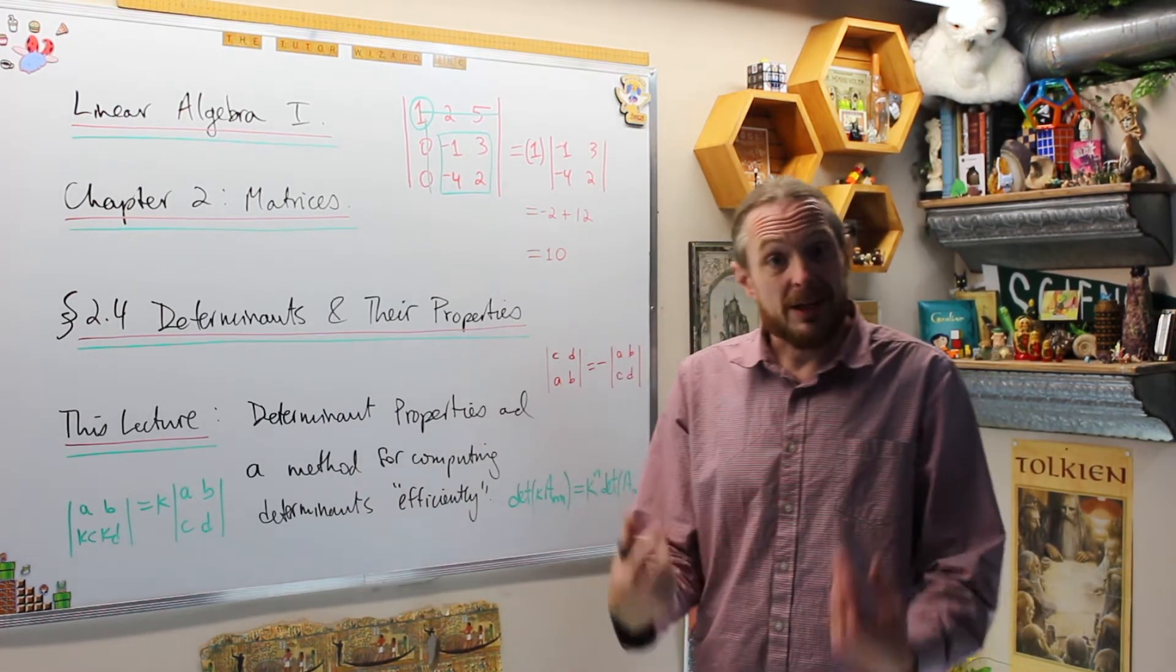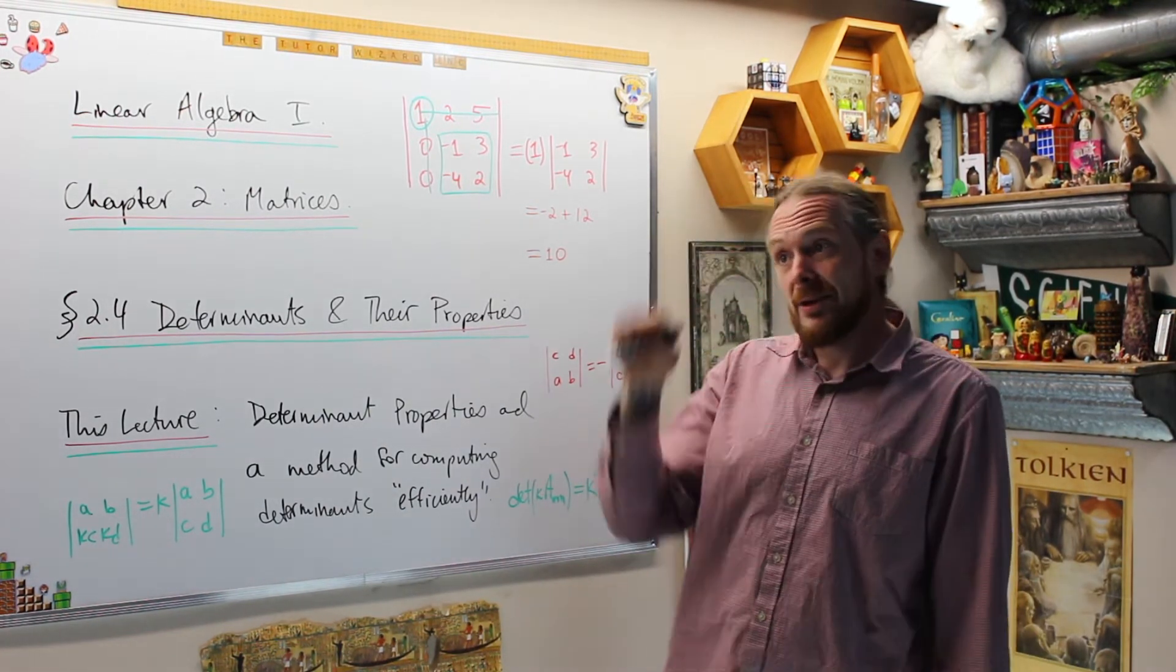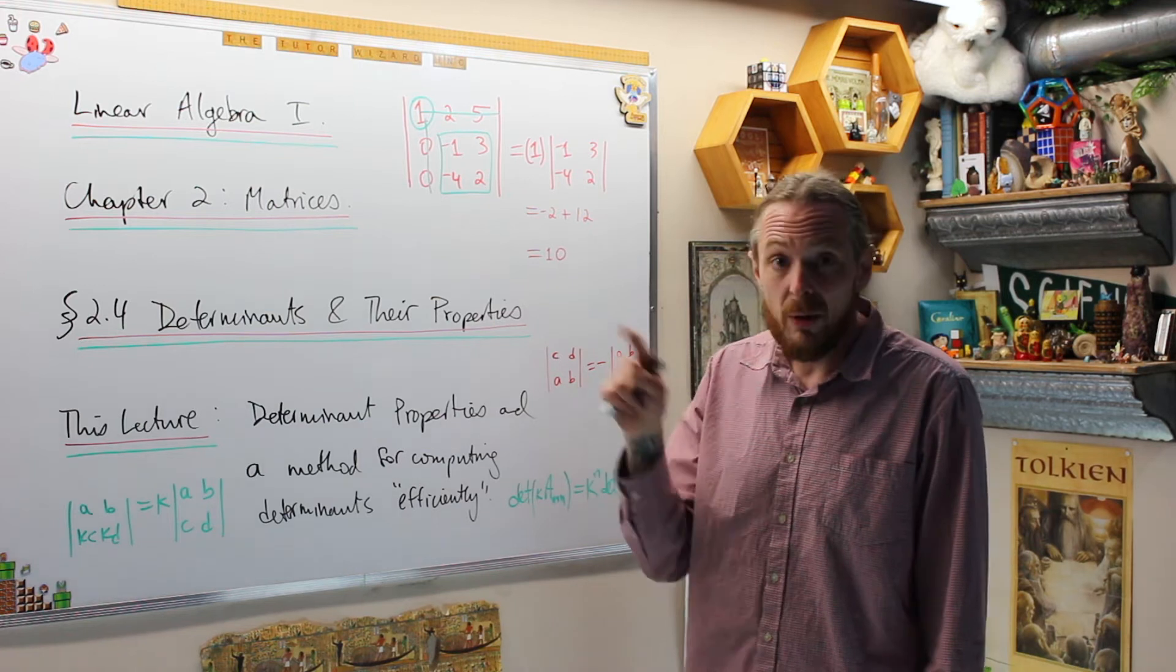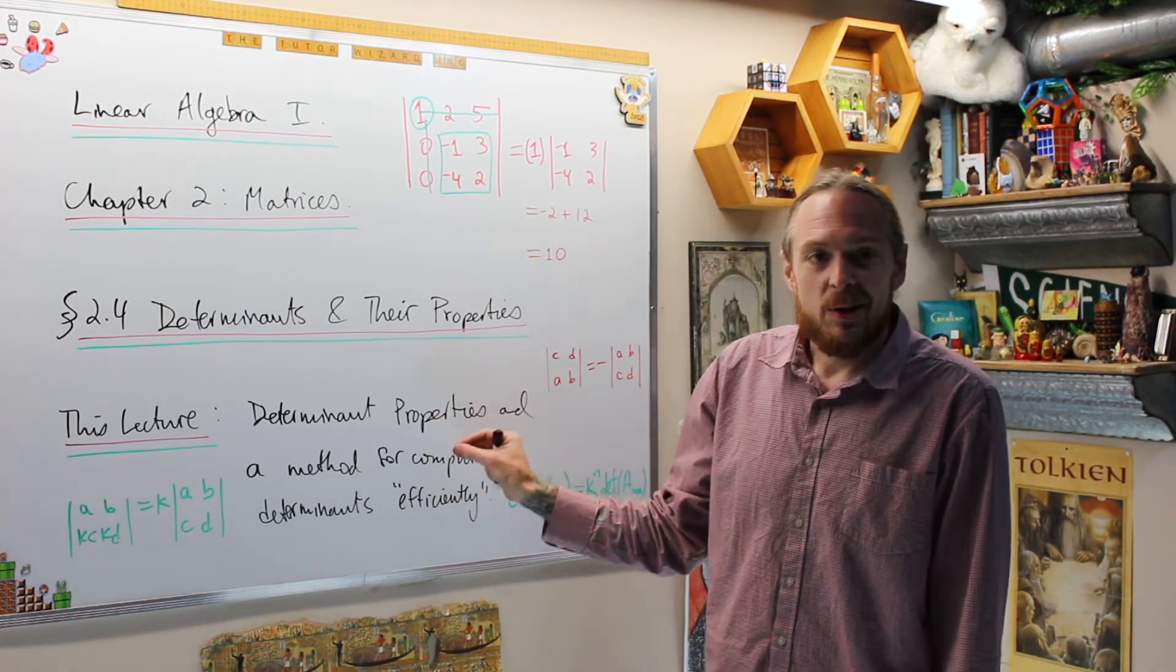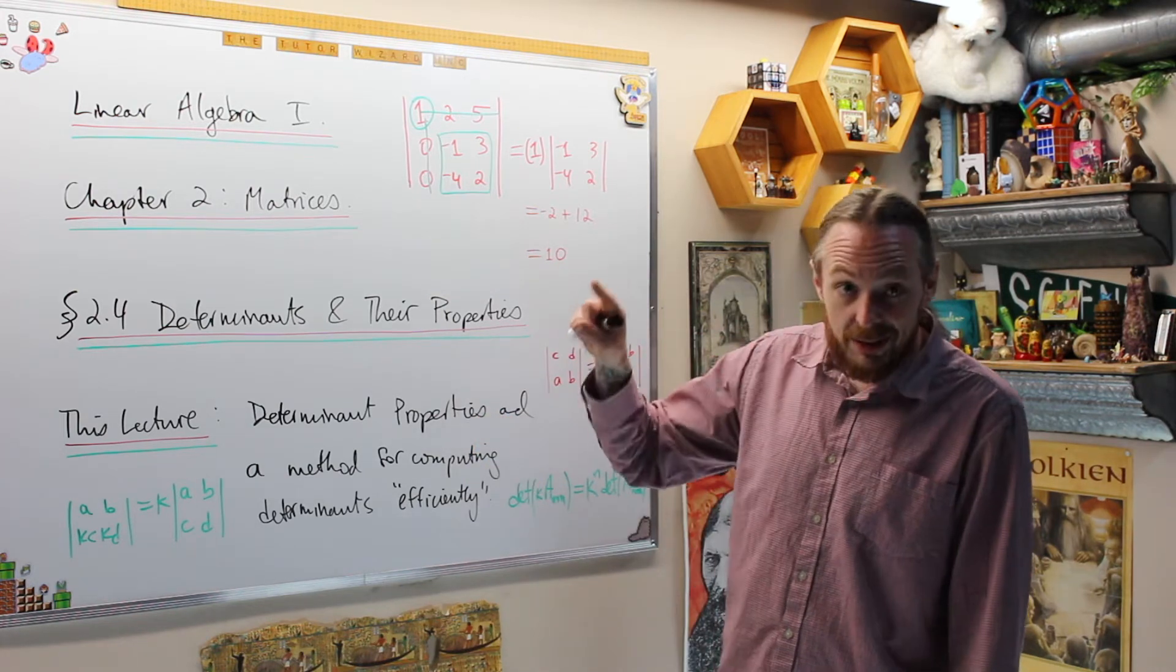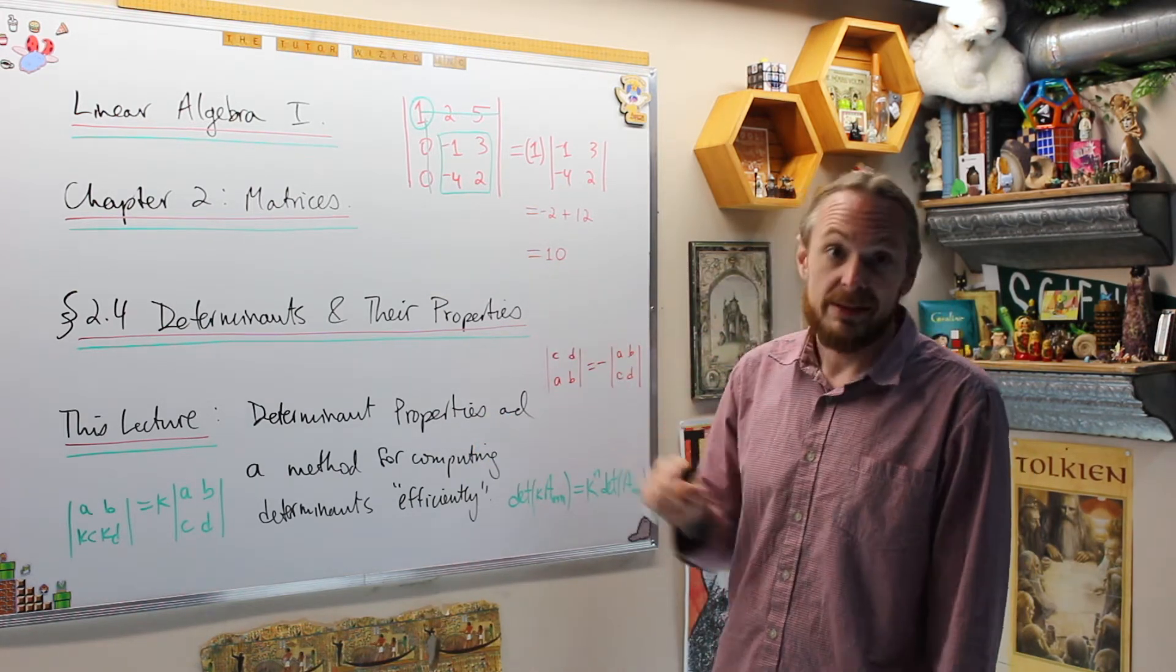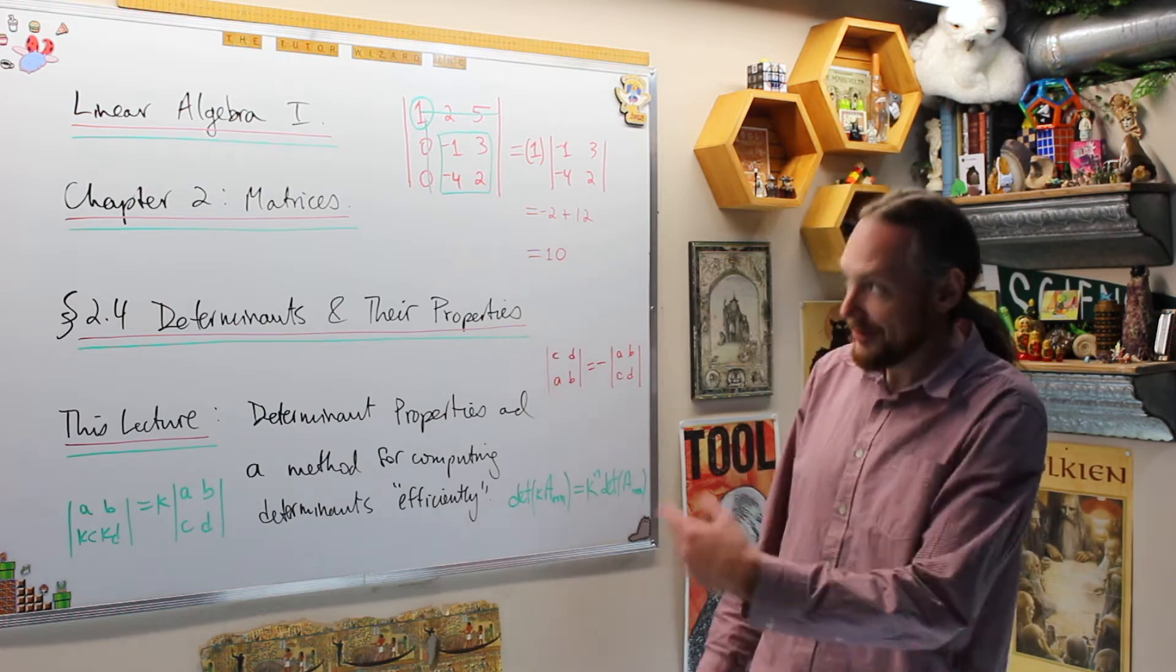Last time, what we did was cofactor expansion, and we saw that we can cofactor expand to find the determinant along any row or any column. But what we're going to do is get us zeros in those determinants cleverly, and then we're going to cofactor along the row that has almost all zeros in it. Let's get to it.